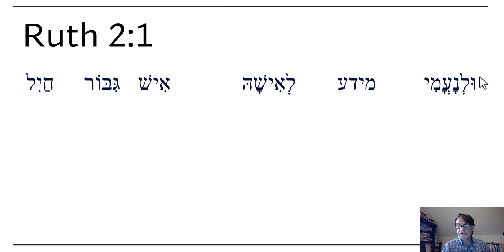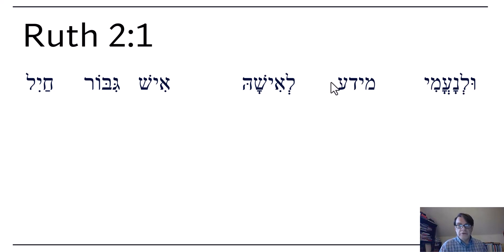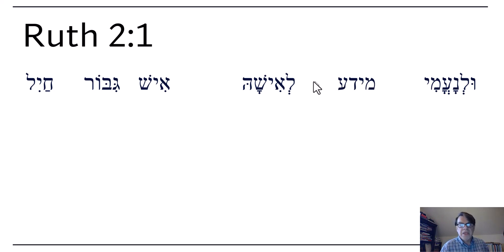See if you can pronounce the Hebrew here. Let me see if I can. So this is Ula Na'ami. Now this one — there are no vowels here. This should be Moab, I think. L'ishah ish gabor kayil.